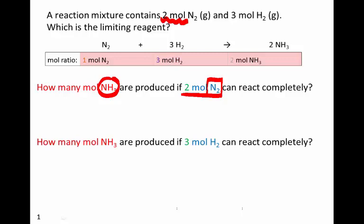And our second question: how many moles of ammonia would be produced if all of the hydrogen that we have, which is 3 moles, is used up?